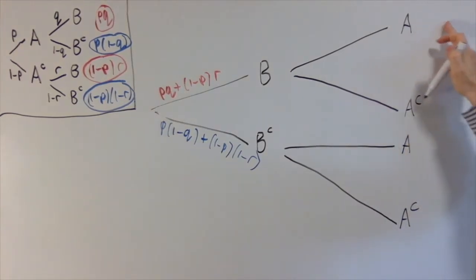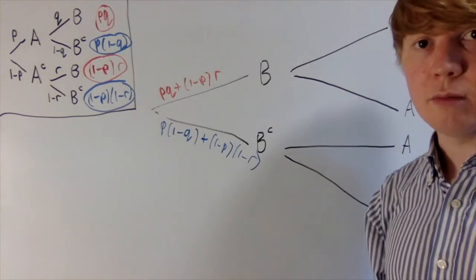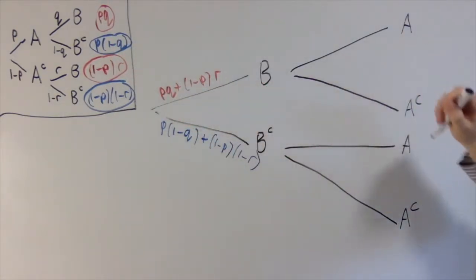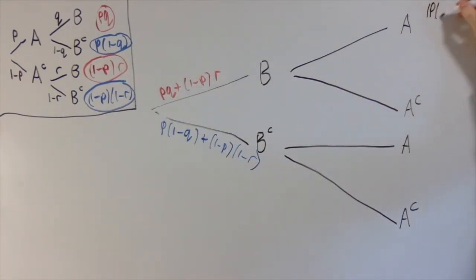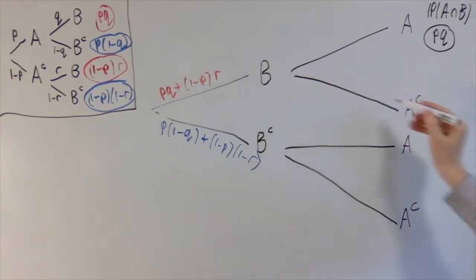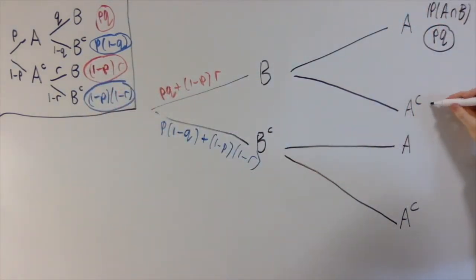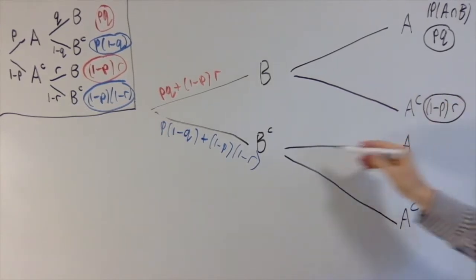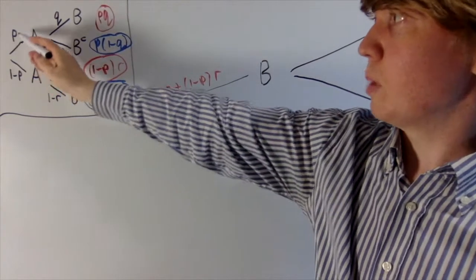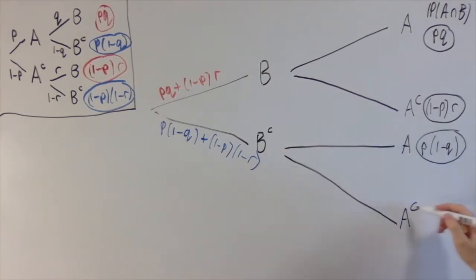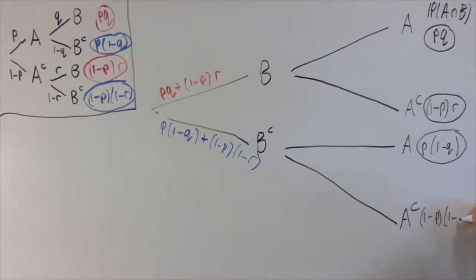What we can do is work out the final endpoint labels — the ones I've circled here. The probability of A and B happening is PQ. The probability of B happening and A not happening is (1 minus P) times R. Then B not happening and A happening is P times (1 minus Q). And finally, B complement and A complement — neither happening — is (1 minus P) times (1 minus R).